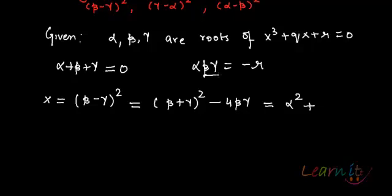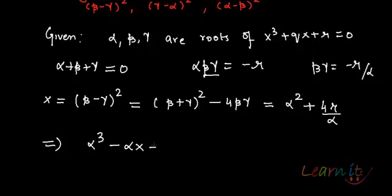And this will be nothing but minus 4βγ. Now βγ from here will be equal to minus r by α. So here I can write instead of minus, now I will have a plus because I have minus r. So we have 4r by α. This implies that I have α³ plus αq minus αx plus 4r equals to 0.